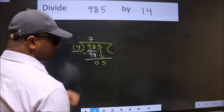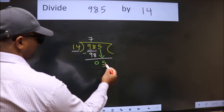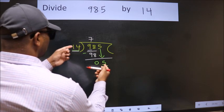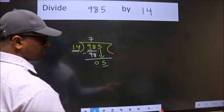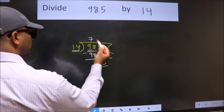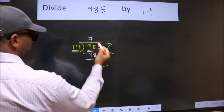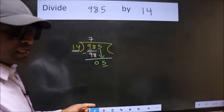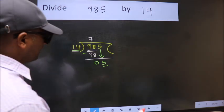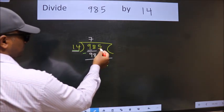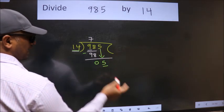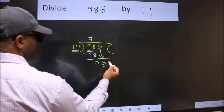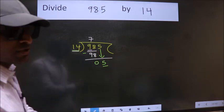And the mistake is this. Here we have 5. Here 14. 5 is smaller than 14. So what many do is they directly put dot, take 0, which is wrong. Why is it wrong? Because just now you brought this number down. And in the same step, you want to put dot, take 0, which is wrong.